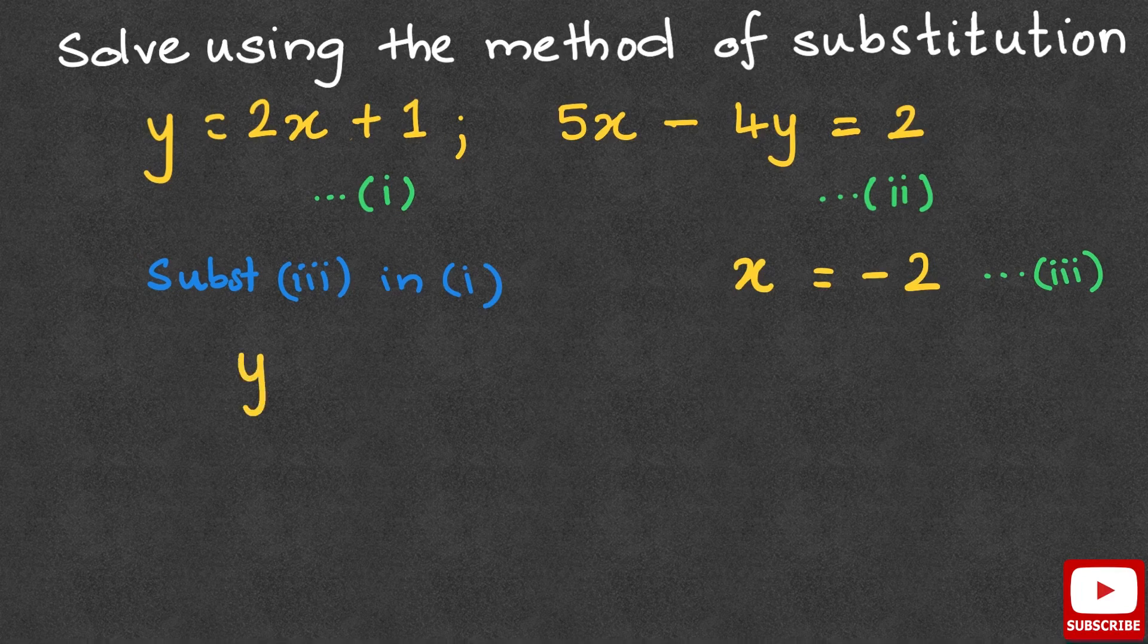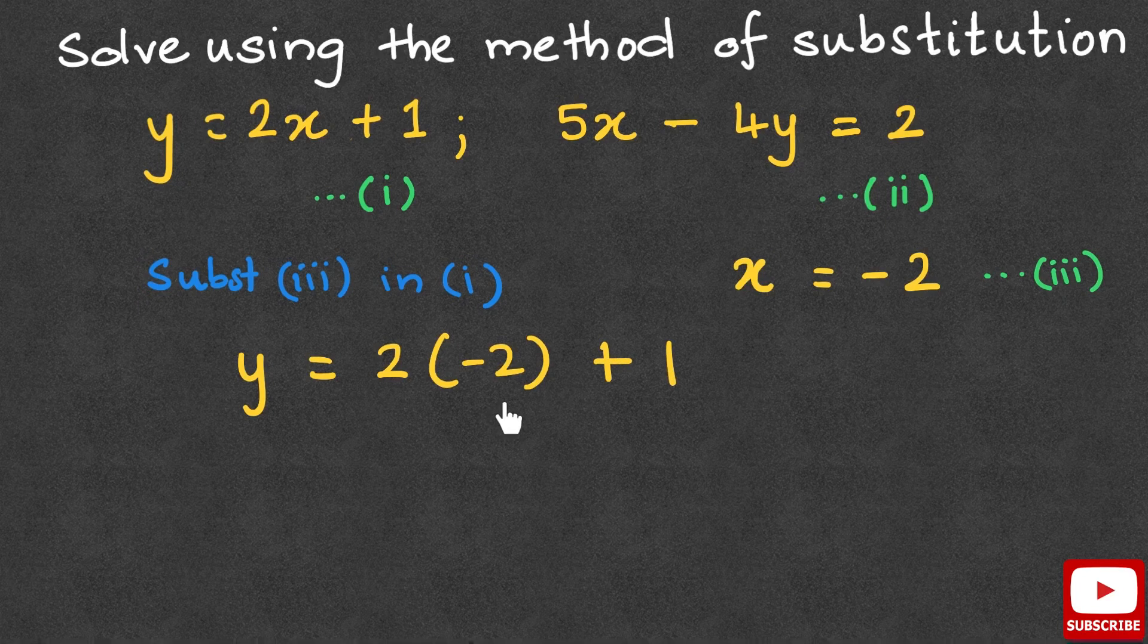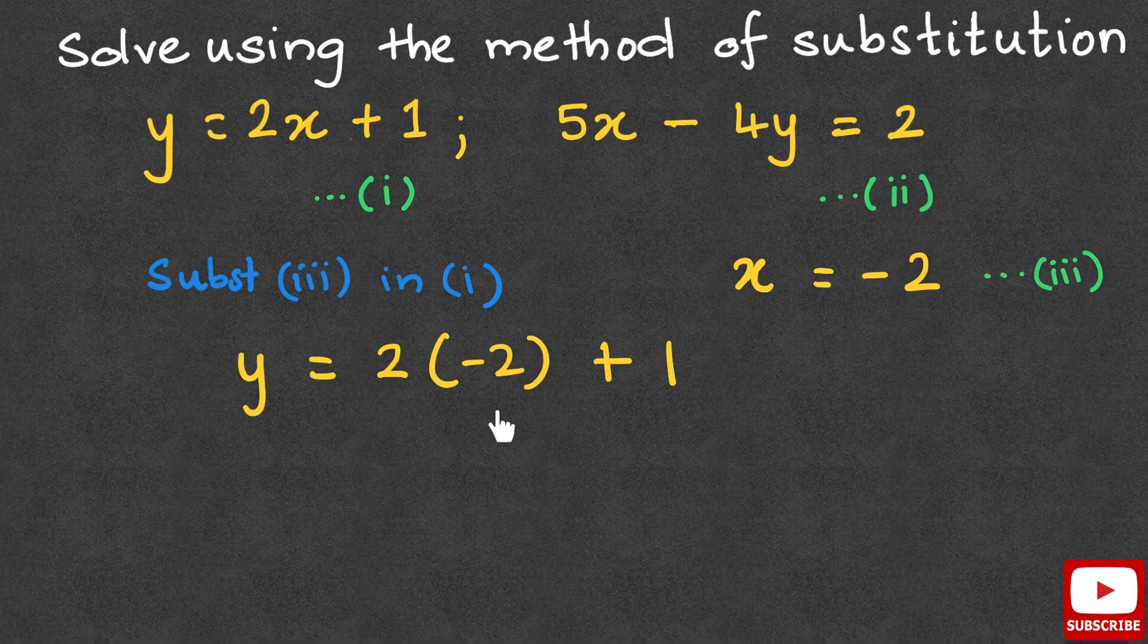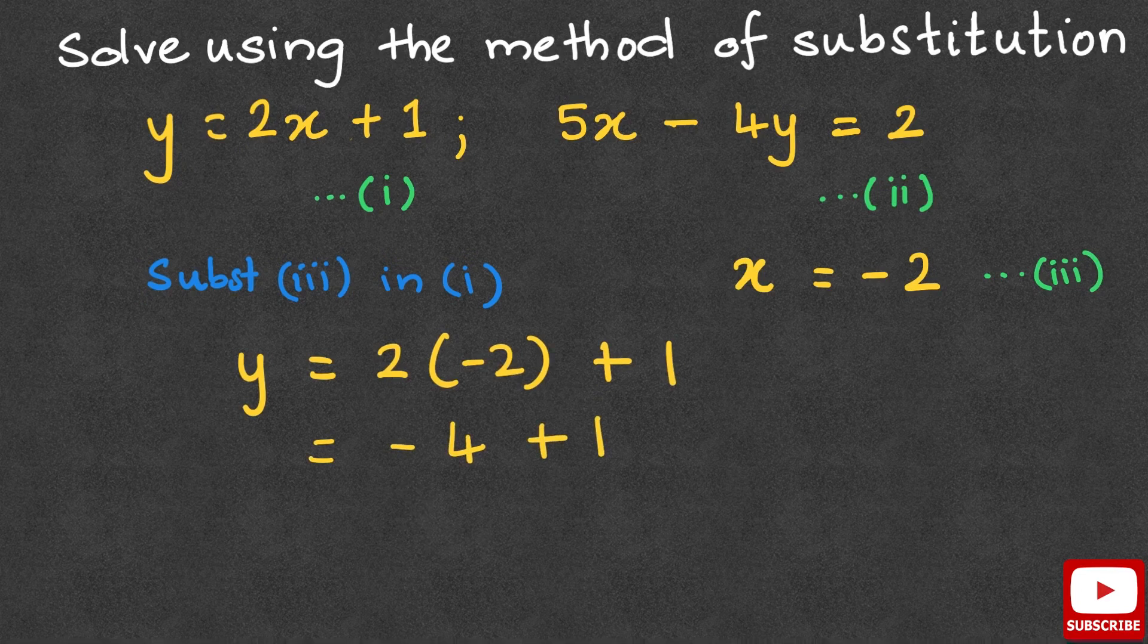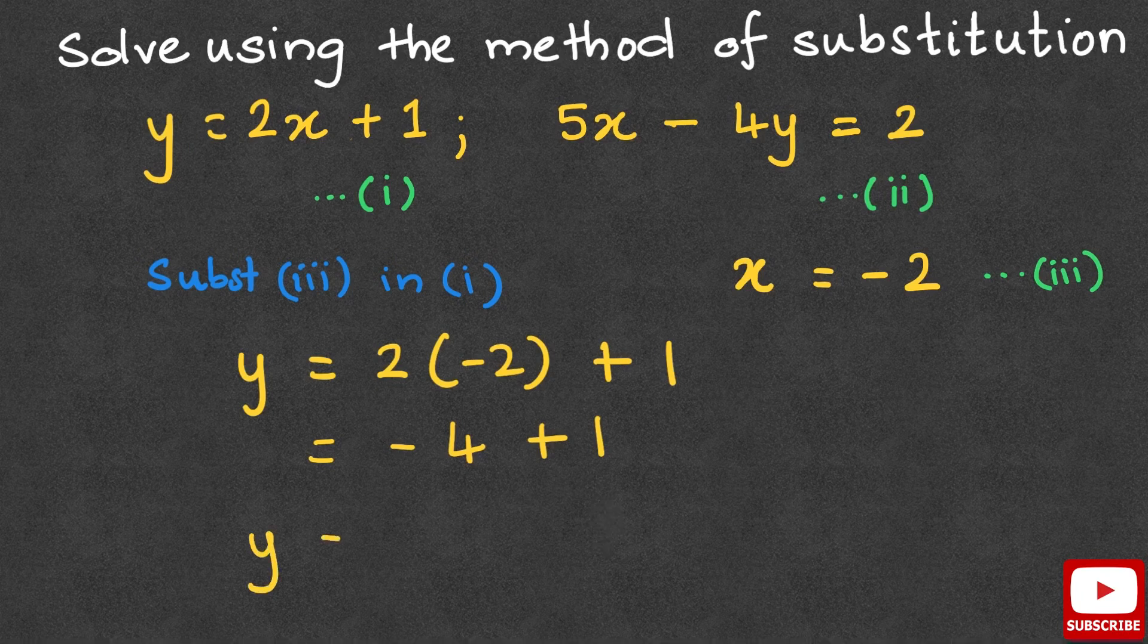So we have y equals 2 times negative 2 plus 1. Negative 2 times 2 is negative 4. So we have negative 4 plus 1. Negative 4 plus 1 is negative 3. Therefore, we have y equals negative 3.